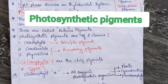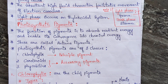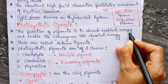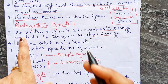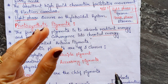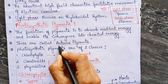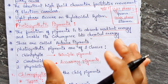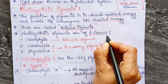Now, photosynthetic pigments. Pigments play an essential role in photosynthesis — without them it cannot happen. The function of photosynthetic pigments is to absorb radiant energy and enable its conversion into chemical energy. These are called antenna pigments. Photosynthetic pigments are of three classes.